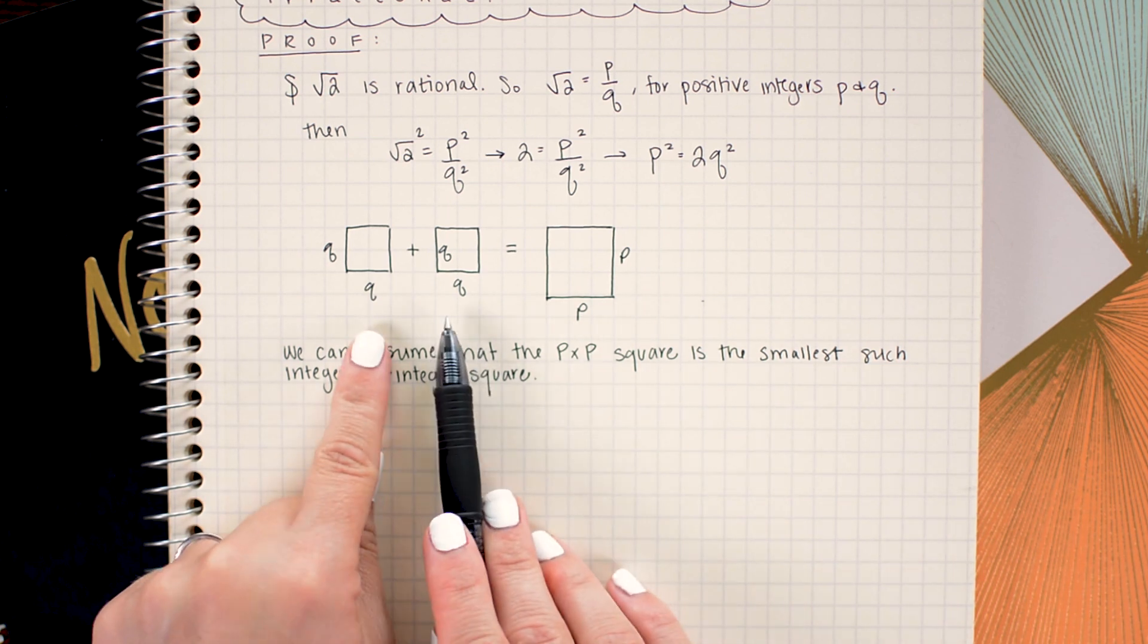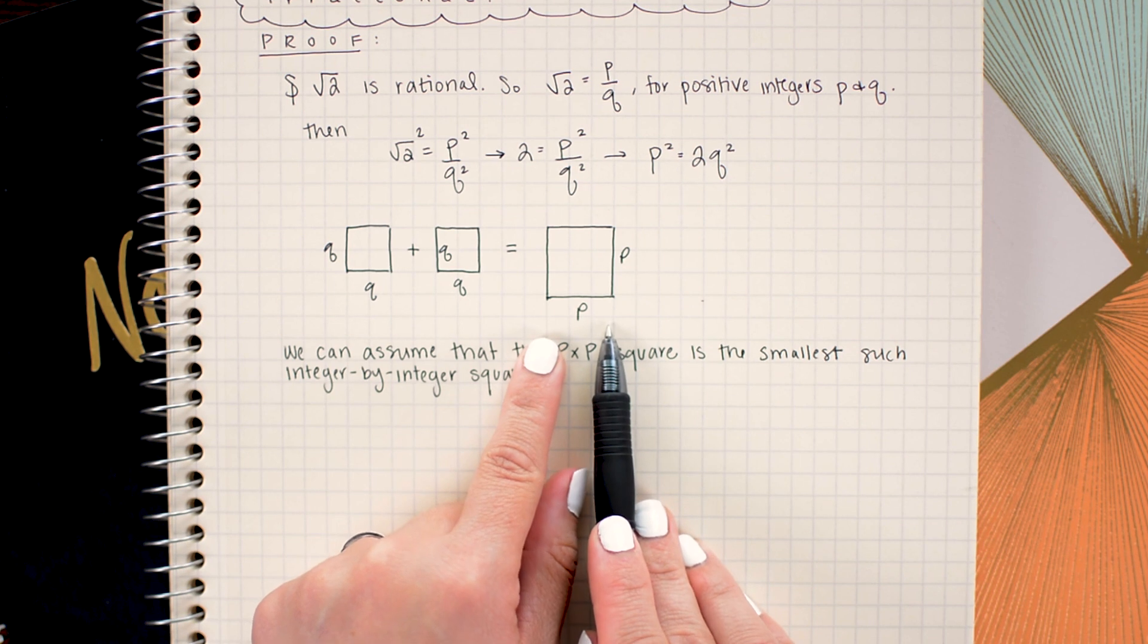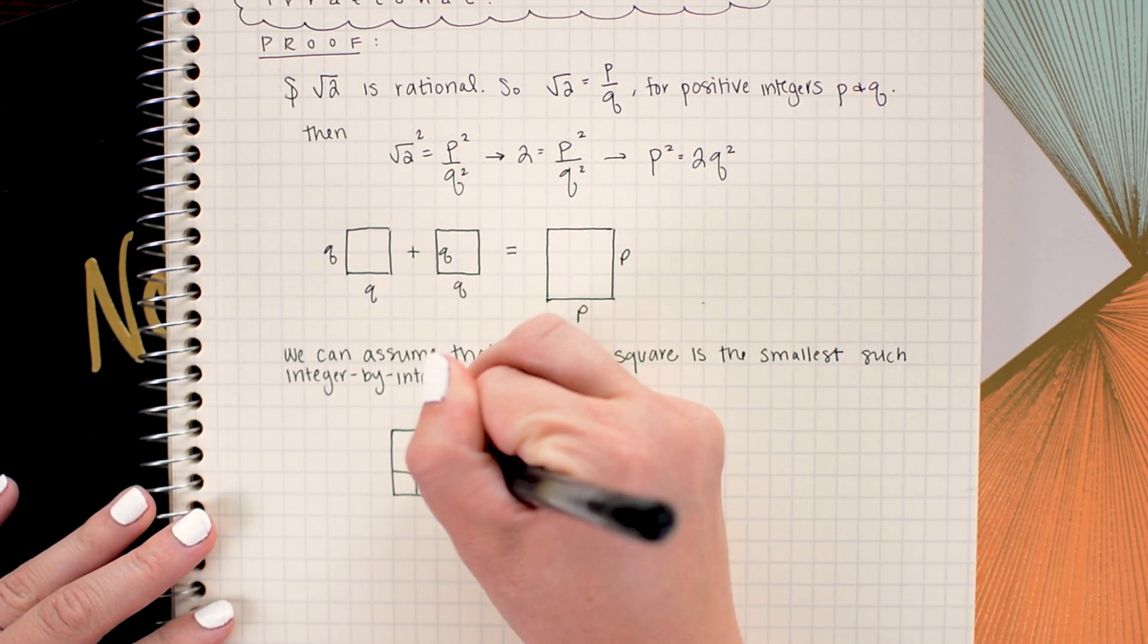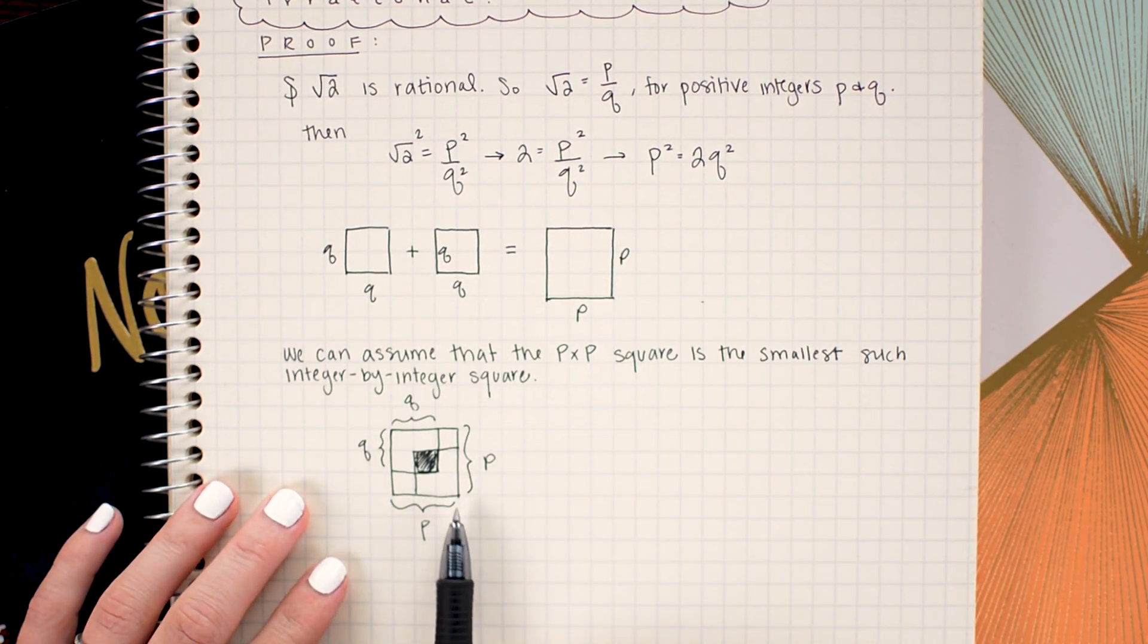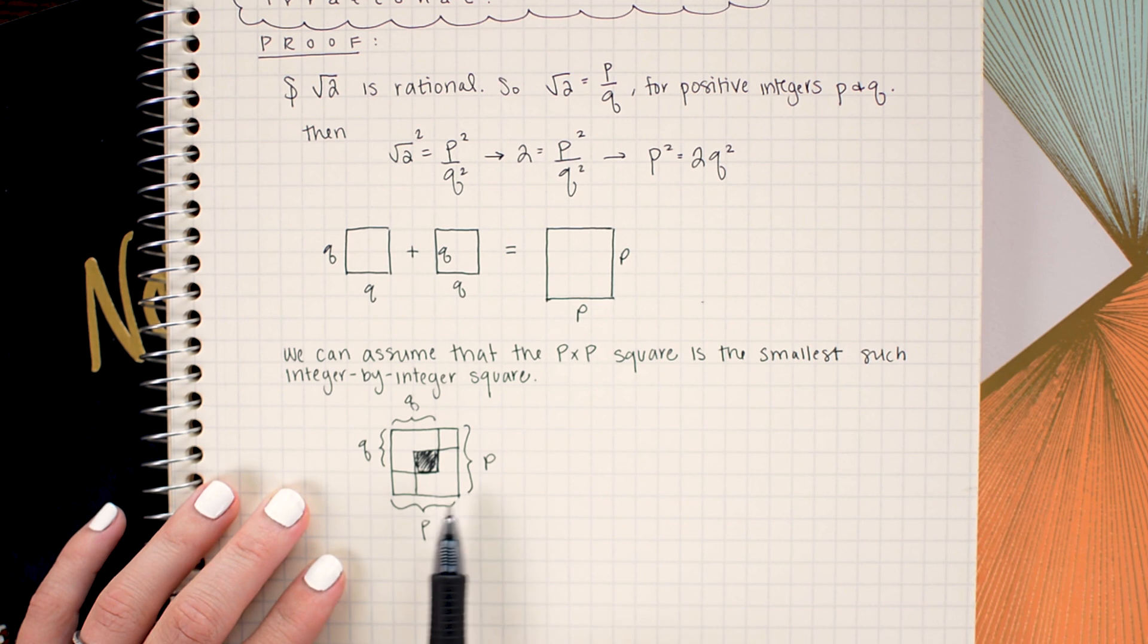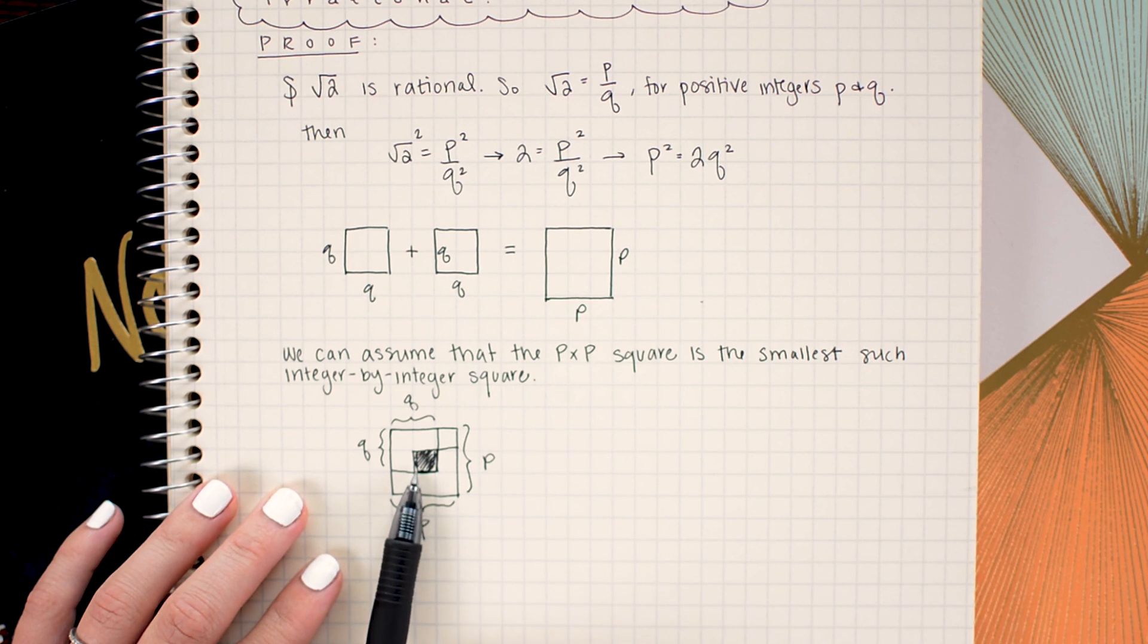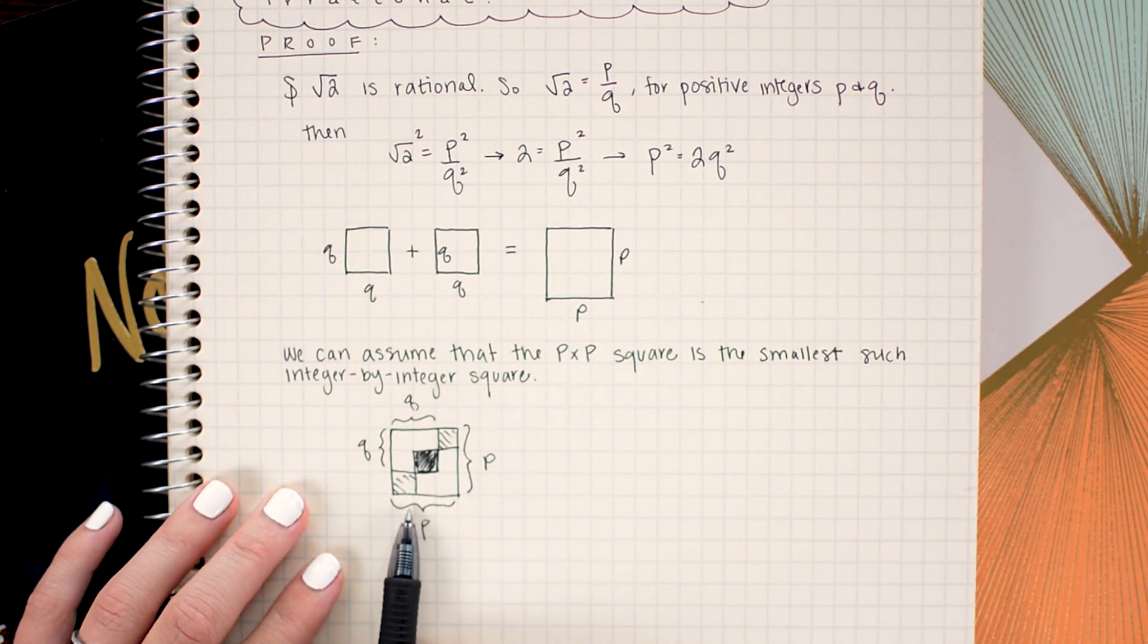What I'm going to do next is take these two smaller q by q squares and place them inside of our larger p by p square and it will result in an overlapping area. Now what we have here is our two smaller q by q squares laid inside of our larger p by p square. And as you can see we get an overlapping area here in the middle and we get two gaps where the squares don't overlap our original p by p square.